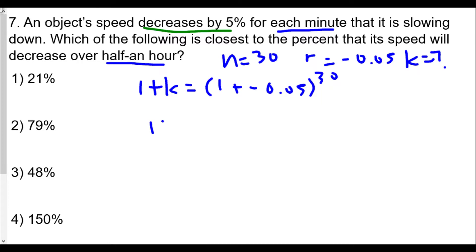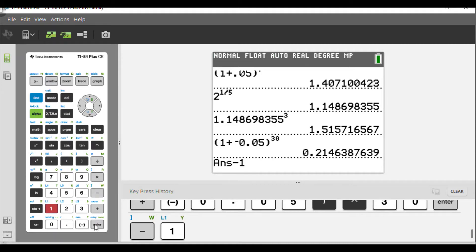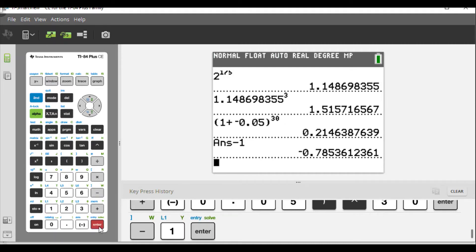So we have 1 plus k equals 0.2146387635, and we subtract by 1. We'll go back to the graphing calculator, take this answer minus 1, and we'll get a negative value: negative 0.7853612361.